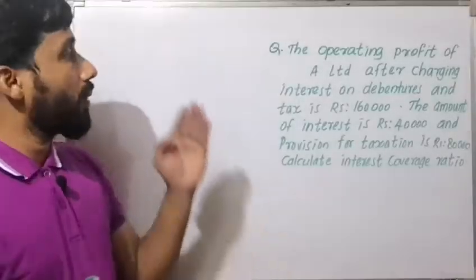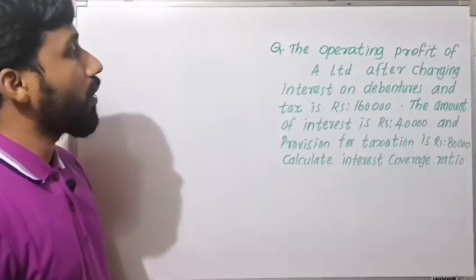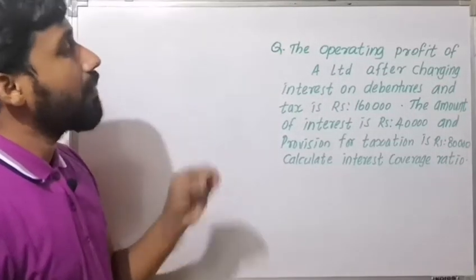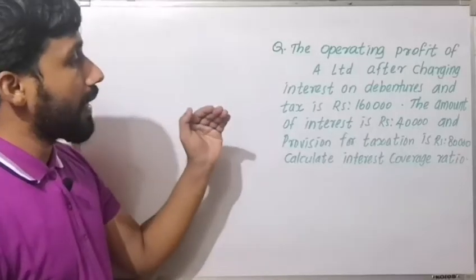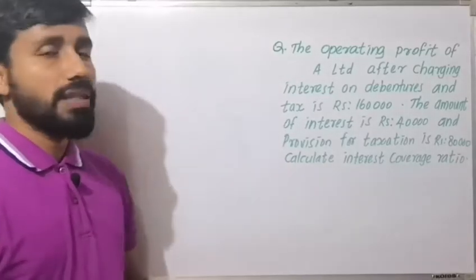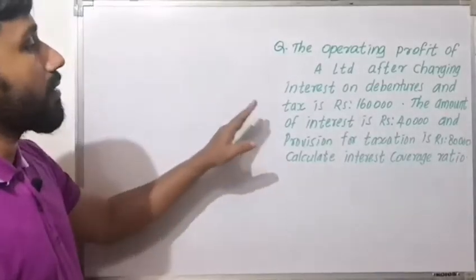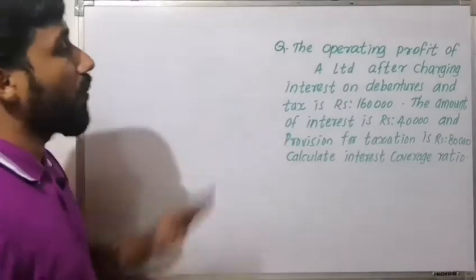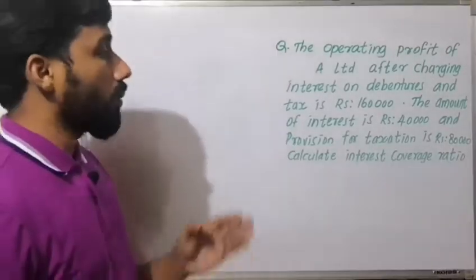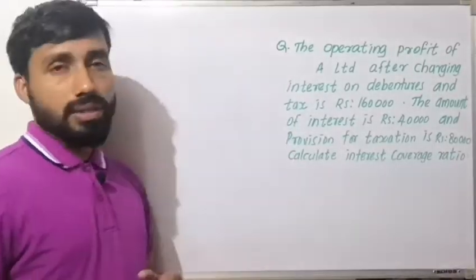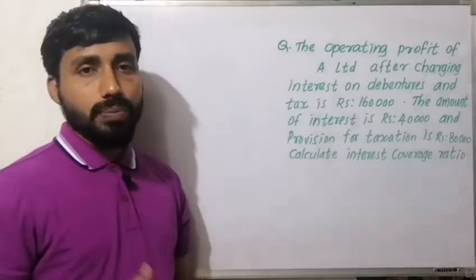Now we will look at a question. The operating profit of A Limited after charging interest on debentures and taxes is Rs. 1,60,000. The amount of interest is Rs. 40,000, and provision for taxation is Rs. 80,000. Calculate the interest coverage ratio.